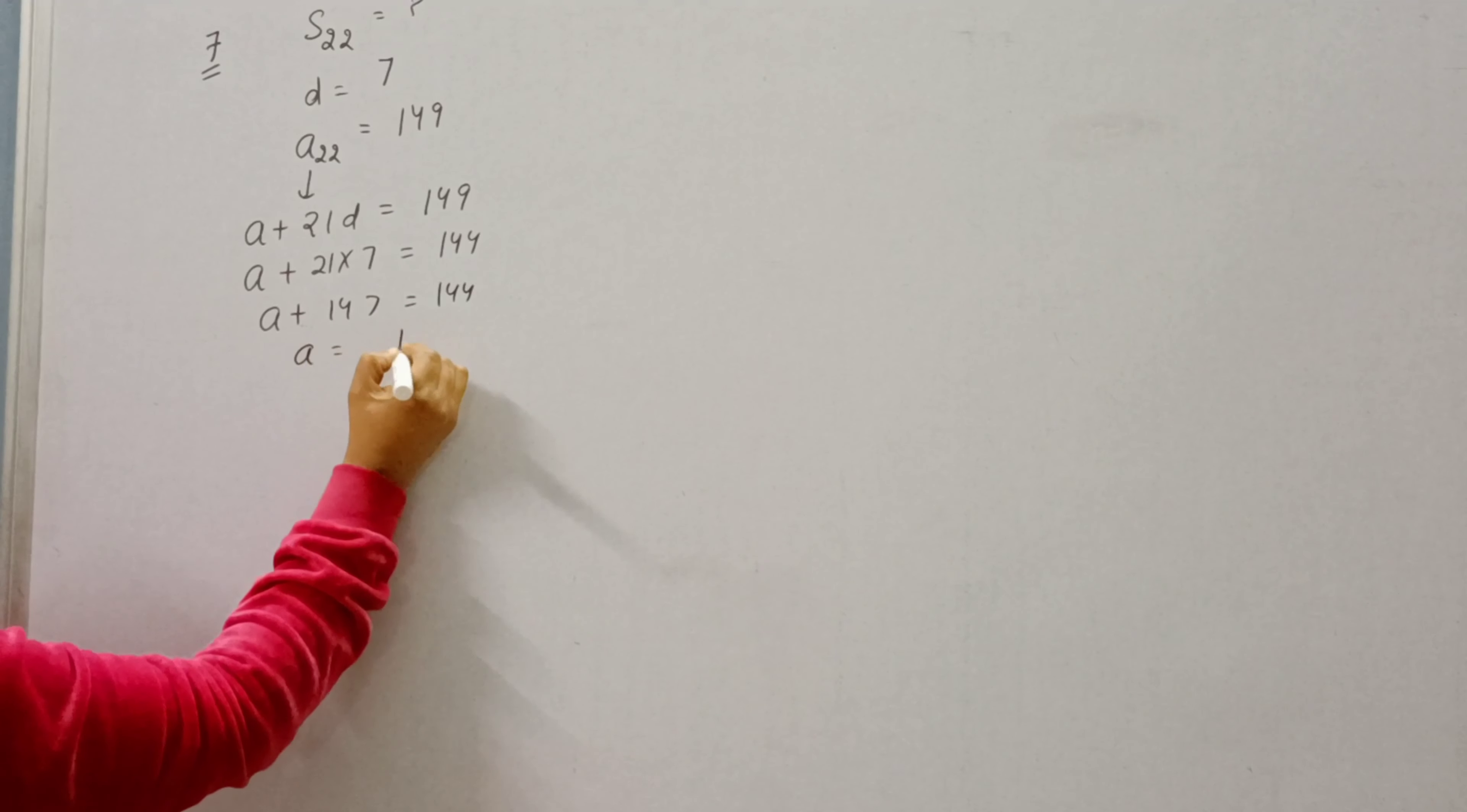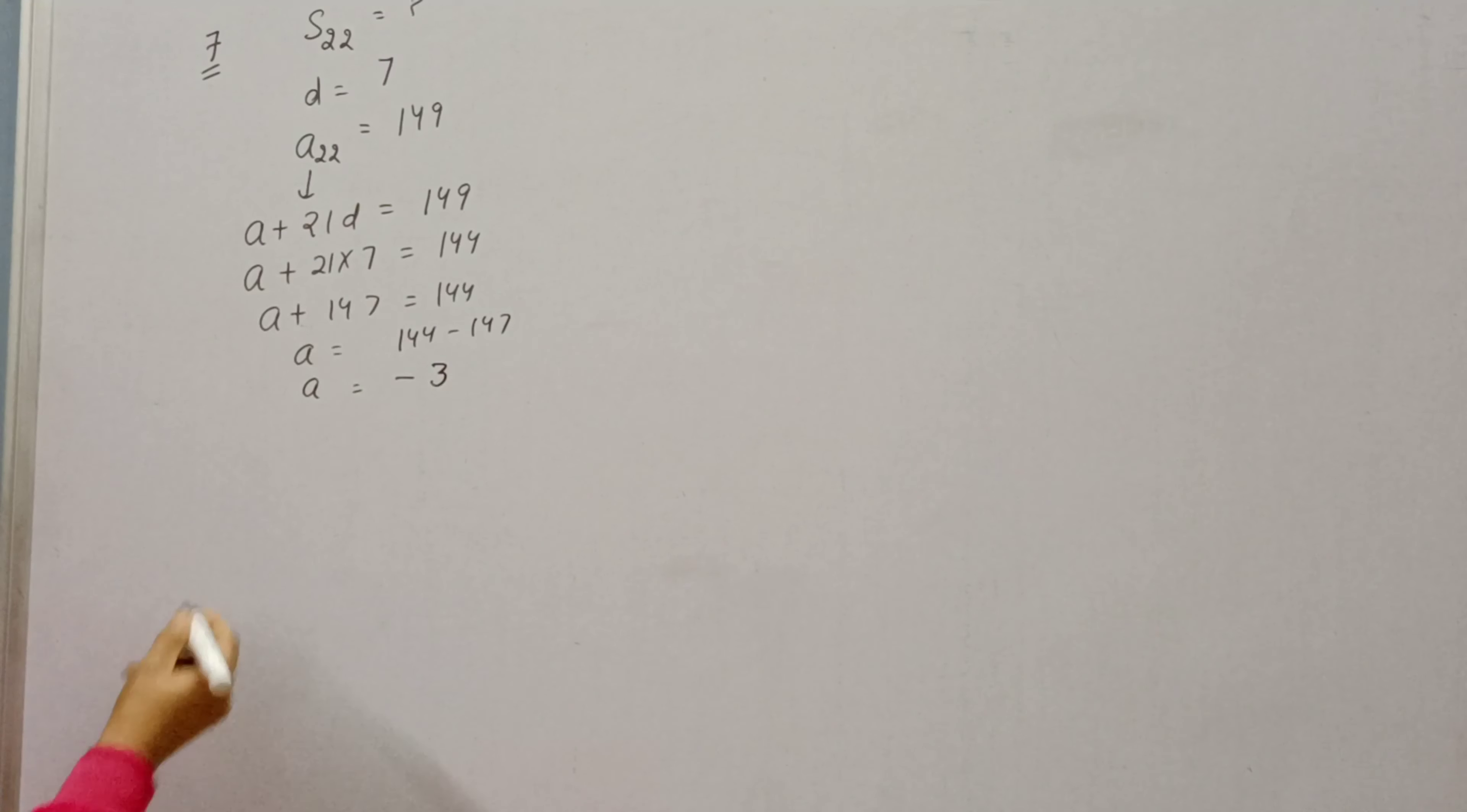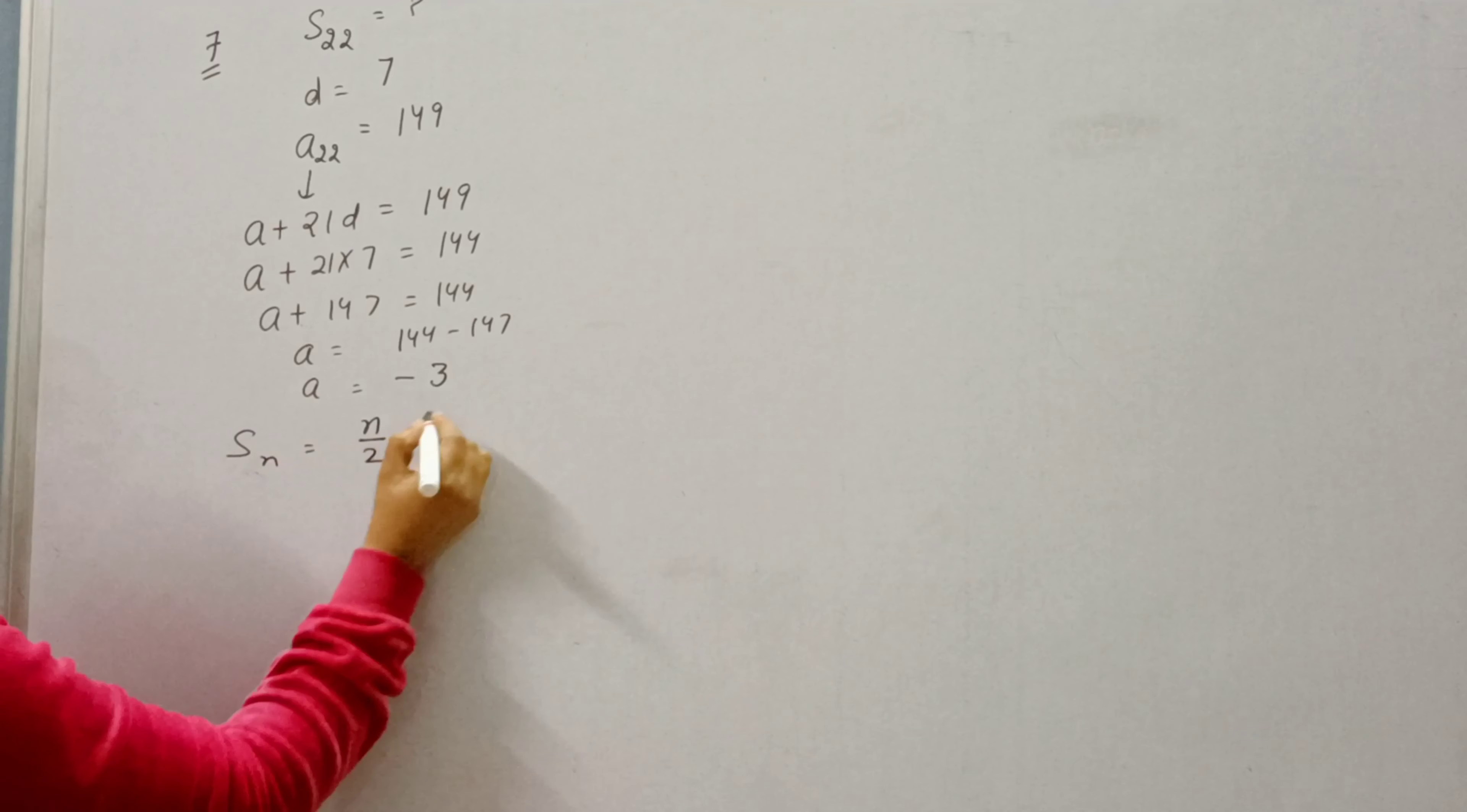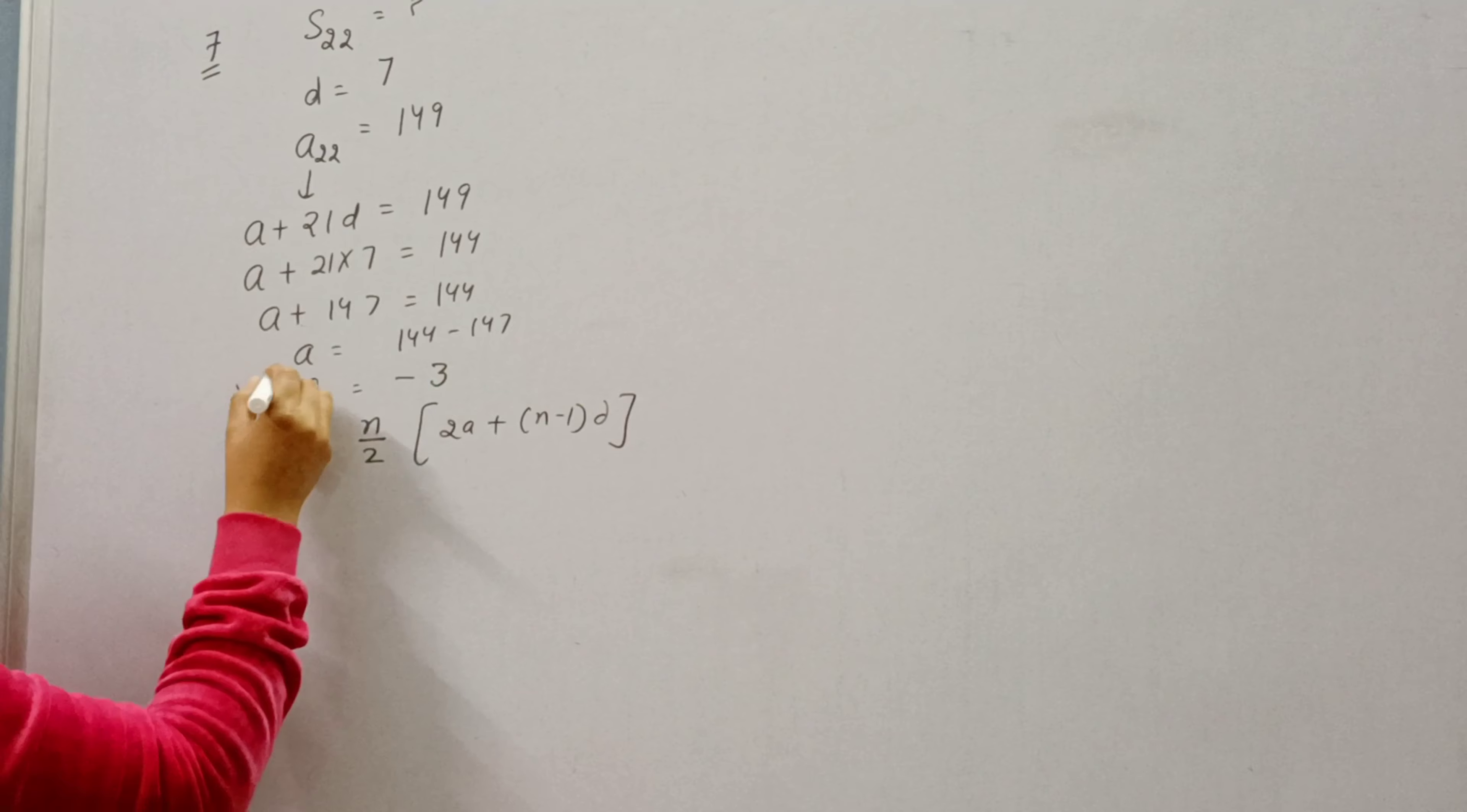So A will become 144 minus 147, that is minus 3. Now we need to find S22. So we will apply formula of SN: N by 2 into 2A plus N minus 1D, or simply because A is known to us...